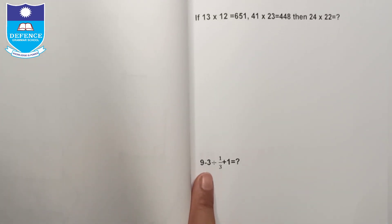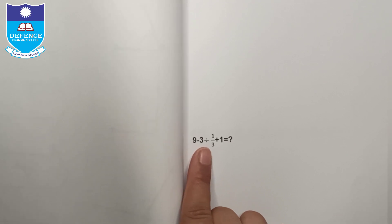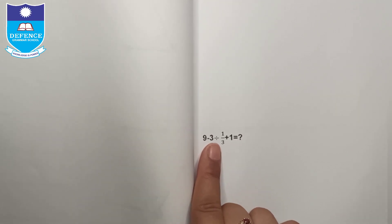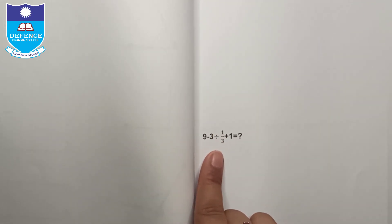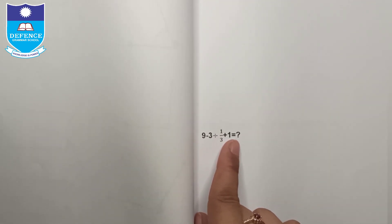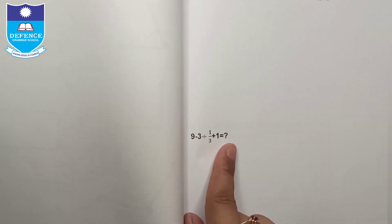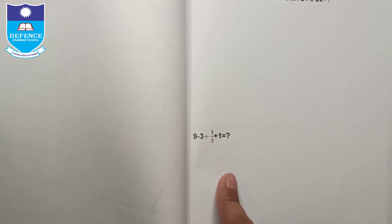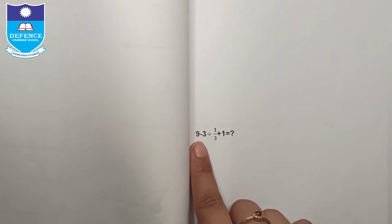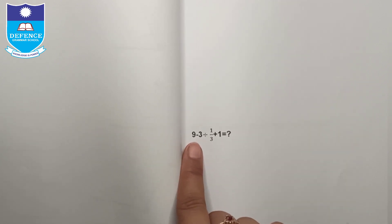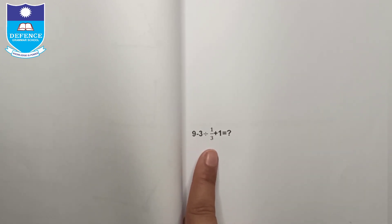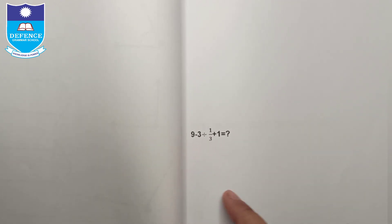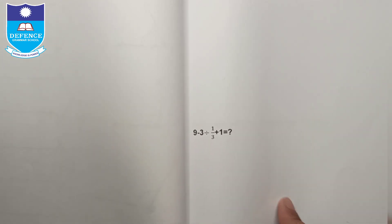Next question: 9 minus 3 divided by 1/3 plus 1 is equal to question mark। हमने इसको BODMAS rule के तहत solve करना है और यहाँ पे इसका answer write करना है।